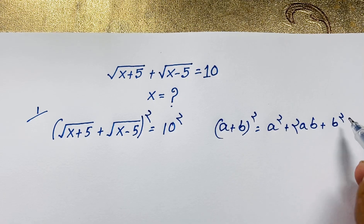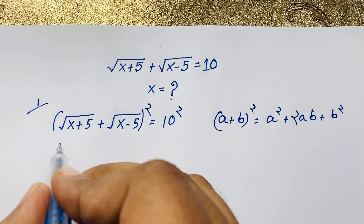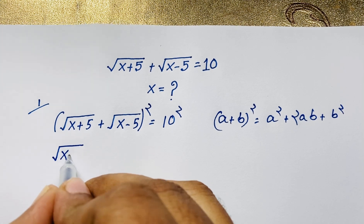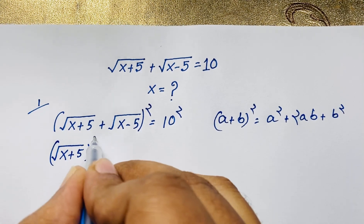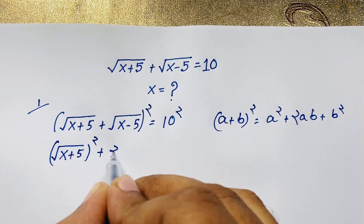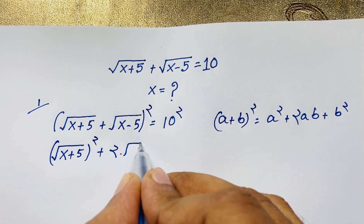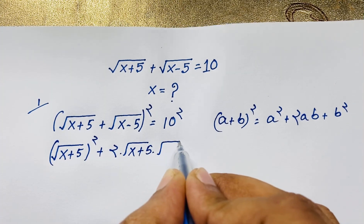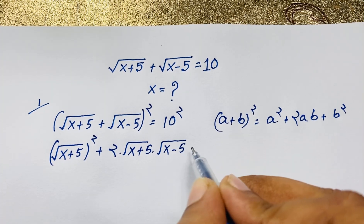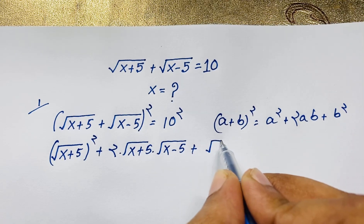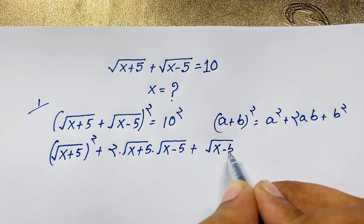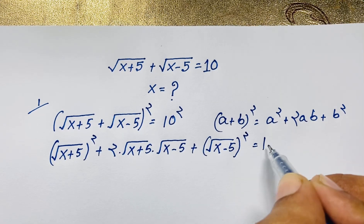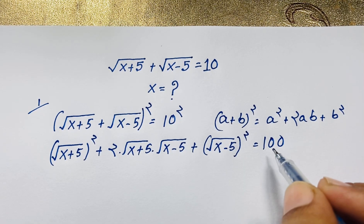If I apply this math formula here, this expression becomes: a squared — where a is square root of (x plus 5) — squared, plus 2ab where a is square root of (x plus 5) times b which is square root of (x minus 5), plus b squared which is square root of (x minus 5) squared, is equal to 10 squared, which is 100.